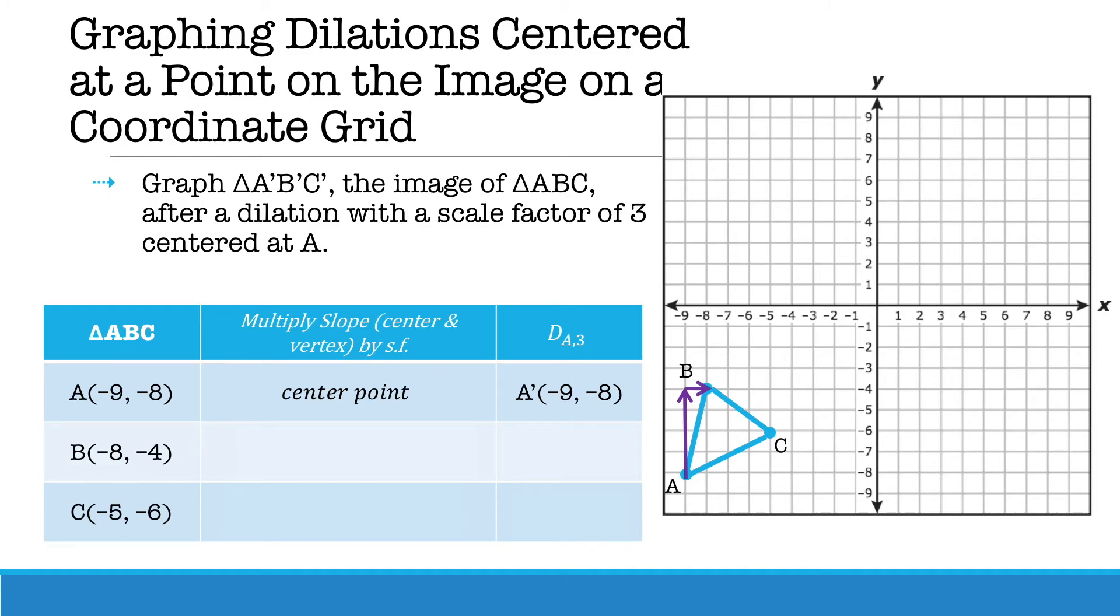For B we're going to count from our center point A to our vertex B. Our slope is 4 over 1. If we were to multiply by a scale factor of 3 the new slope would be 12 over 3 resulting in the new coordinate point (-6, 4).